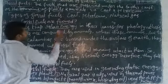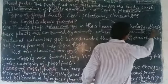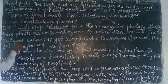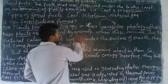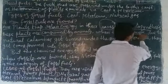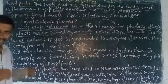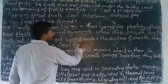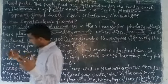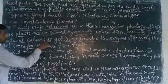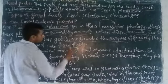Plants trap solar energy in their leaves for the photosynthesis process. These plants are consumed — eaten — by animals. When these animals, due to natural causes, get buried under the surface of the earth, the remains of those plants and animals get transformed into fossil fuels.